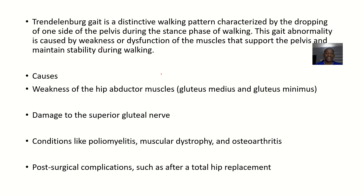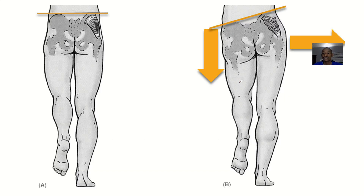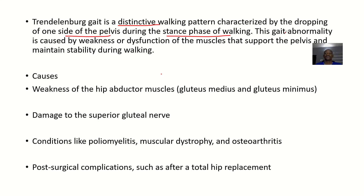The Trendelenburg gait is a distinctive walking pattern characterized by dropping of the pelvis on one side during the stance phase of walking. The side you are placing on the ground gets elevated, while the opposite side drops. This gait abnormality is caused by weakness or dysfunction of the muscles that support the pelvis and maintain stability during walking.